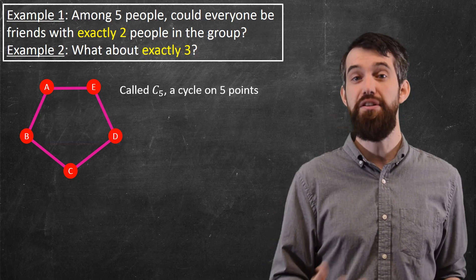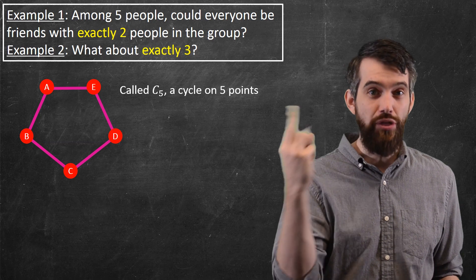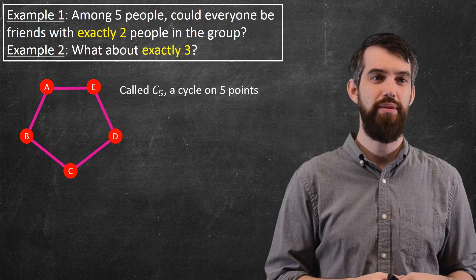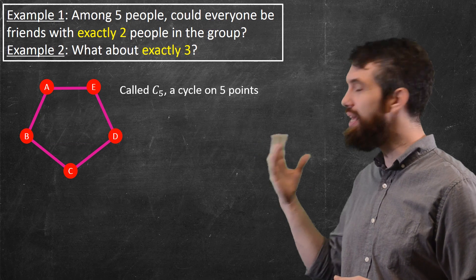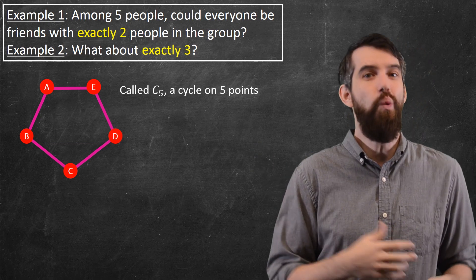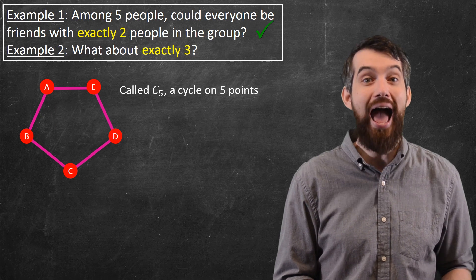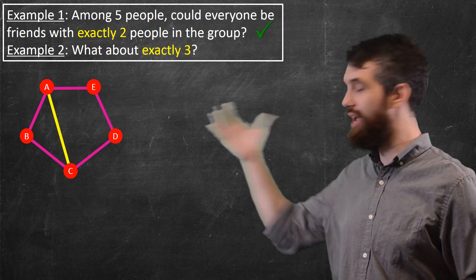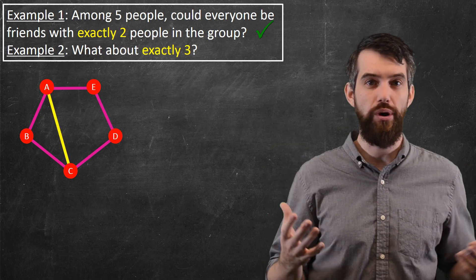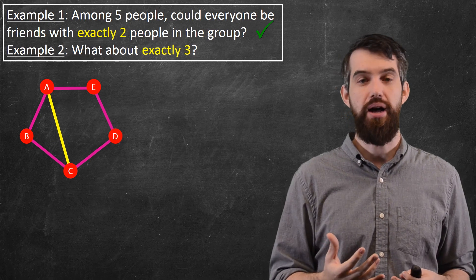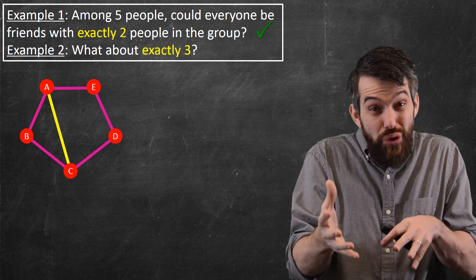Okay, what if instead of two people, now it's exactly three people that everyone's friends with? So, let's think about A. They're already connected to the B and to the E. Well, why don't I say that they're going to be connected to C as well? So, I'm going to come along here and add in one extra connection. So, that works. A is connected with three people. It looks like C is also connected to three people, but what about B?